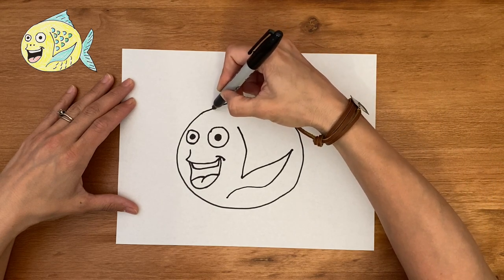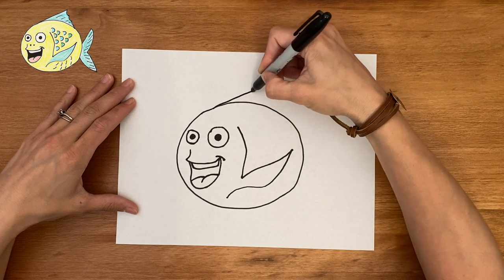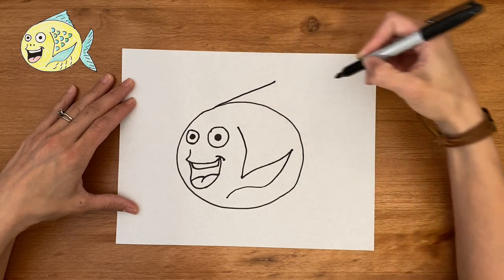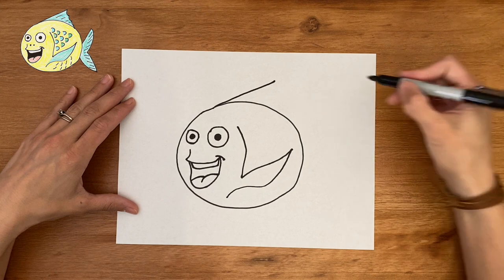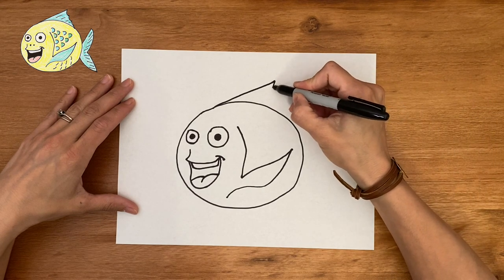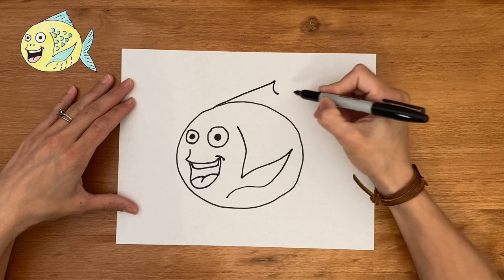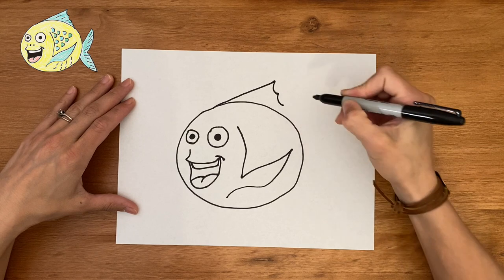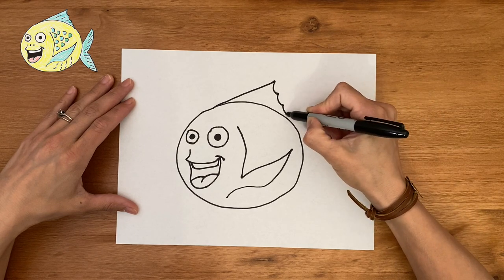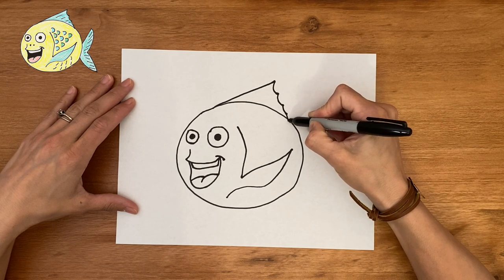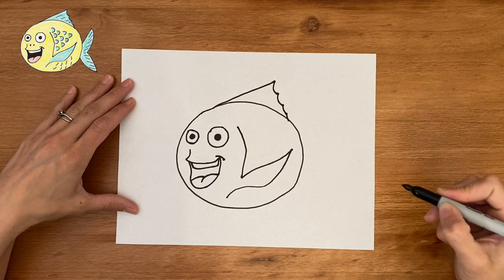Now let's make the top fin. So let's kind of just start out making a diagonal line there up from the top and then little swoops to show the edges of the fin. Just like that. Just connect it at the back.